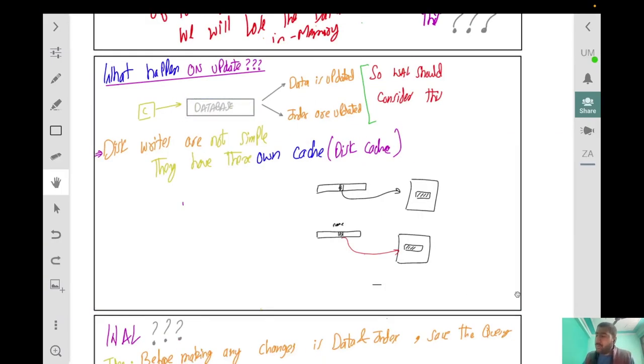Before understanding what a write-ahead log is, I want you to know two things. One is when the client makes an update or delete query to a database, the data will change but also an index could change. Let's take two scenarios: if we have a row and an index was pointing to it and we delete the row, the index needs updating. Second example: if we have an index on a name field and the update query changes the name field itself, we have to change values in the index. That is the reason we have to change the data and also indexes.